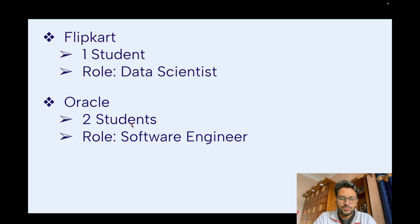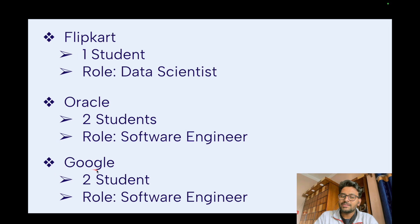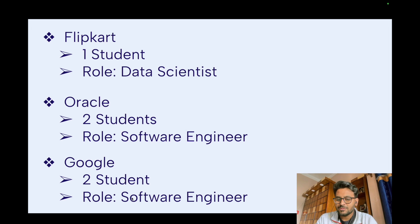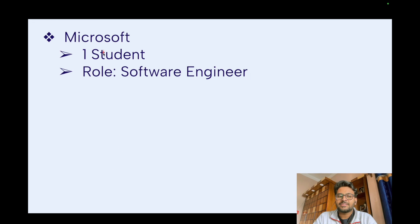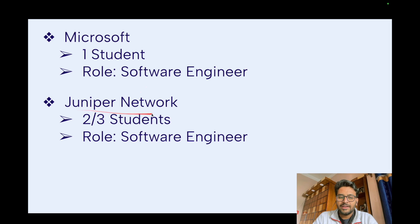Oracle took two students for a Software Engineering role. Google took two students for Software Engineering. If you have watched my previous videos, you'll know that Google is typically inclined to take B.Tech students for Software Engineer roles. Very rarely do they take M.Tech students. But here, Google has taken two students from IIT Kanpur M.Tech CSE for Software Engineer, which is significant. Microsoft took one student for Software Engineer, and Juniper Networks took two or three students for Software Engineering roles.